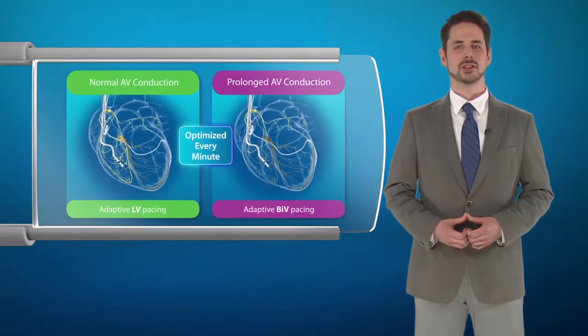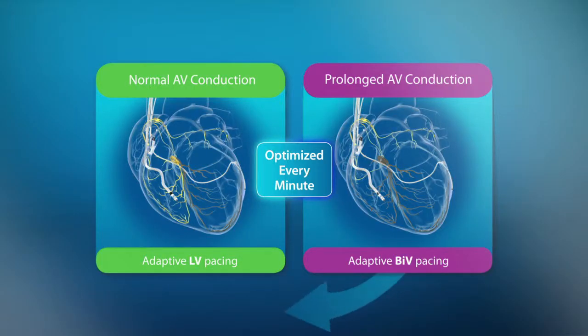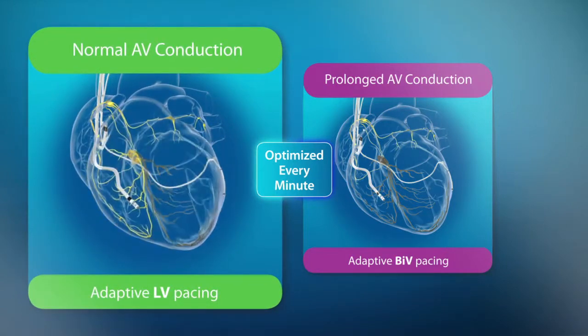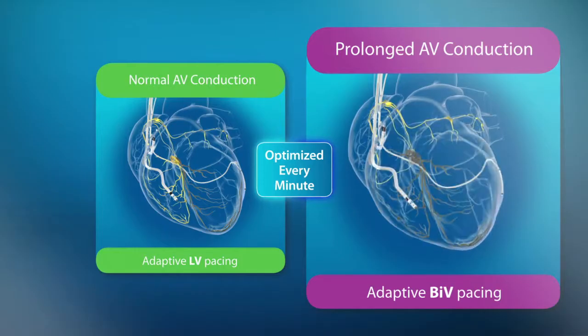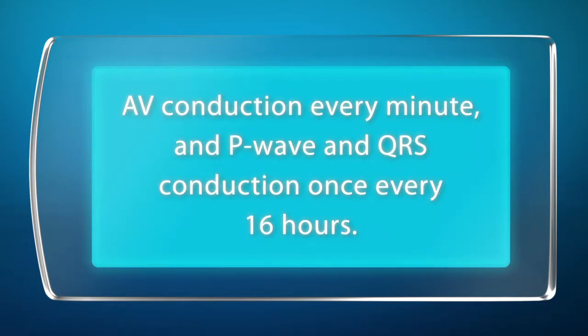Medtronic's response to the need for simple and efficient CRT optimization is Adaptive CRT — the industry's only algorithm that continuously and dynamically optimizes CRT pacing method and AV and VV delays. Adaptive CRT monitors a patient's rhythm, and if it is regular, measures three intrinsic conduction intervals: AV conduction every minute, and p-wave and QRS conduction once every 16 hours.